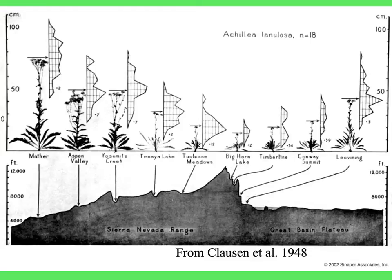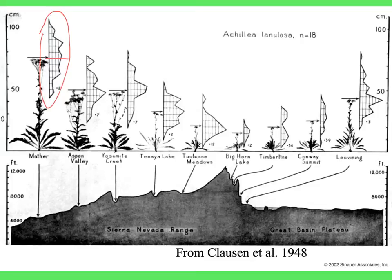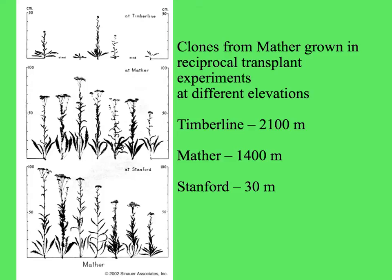Here's a graph from one of their original papers looking at plant size of Achillea lanulosa, the yarrow, at different sites. At each site, an arrow points to where that site is in the transect across the Sierra Nevada, with a silhouette of the plants and a frequency distribution of height. In general, at lower elevations the plants were taller. The western side of the Sierra Nevada is much wetter than the drier side on the right, where the plants are shorter. At higher elevations, plants are smaller and flower less.